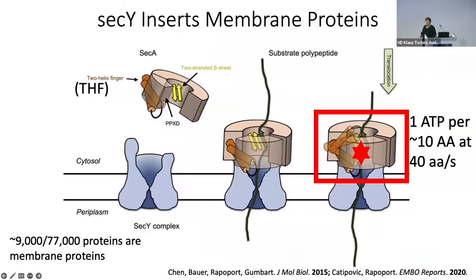We also use information from molecular dynamics simulations. A former student of my husband, Gumbart, looked at the assembly of the translocase and the ATP cost and speed of reading in the membrane protein. Those two results fed into the picture I showed you.